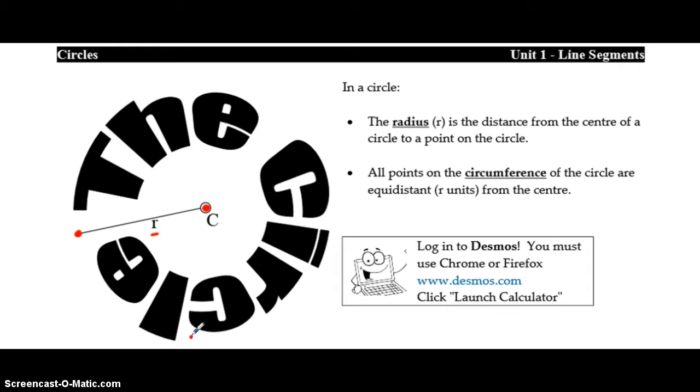All points that are on the circumference, any point that is on the outside of the circle, is equidistant from the center, which means every single point here, the distance between that point and the center is all the same, and all of them are equal to the radius. That becomes important later on when we develop the formula for the equation of a circle.